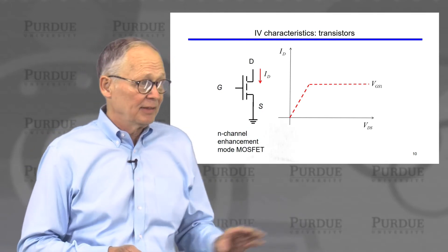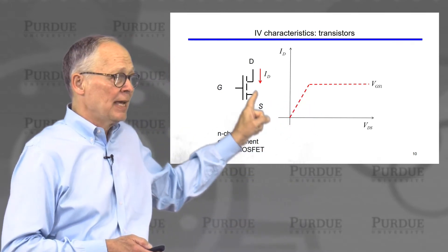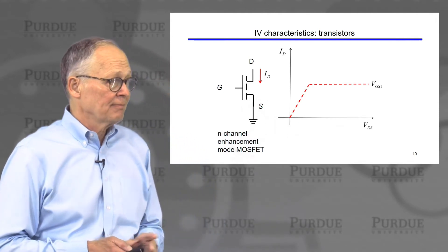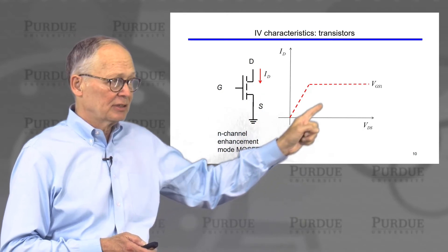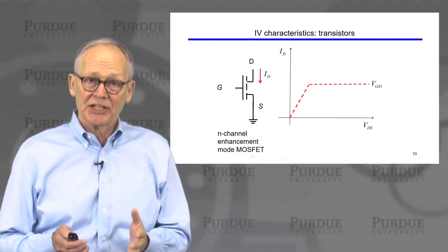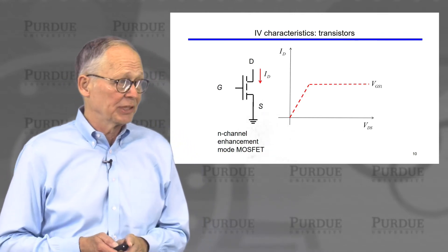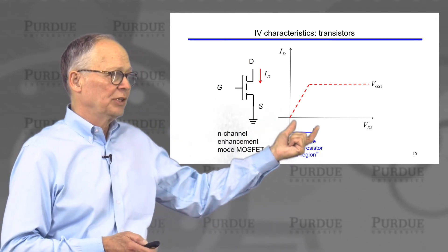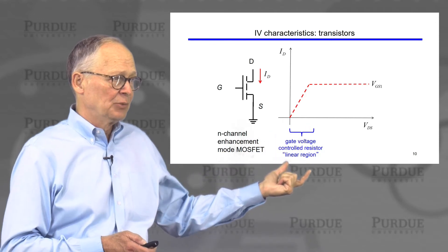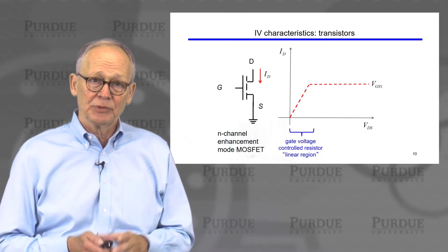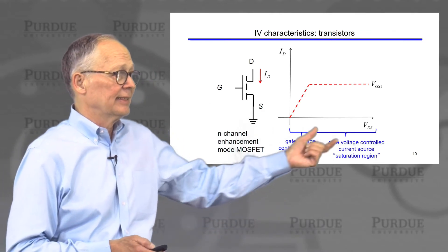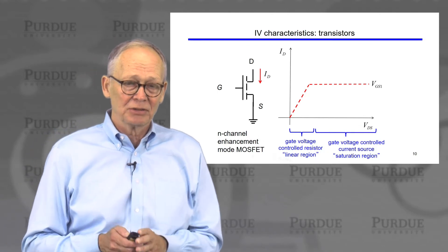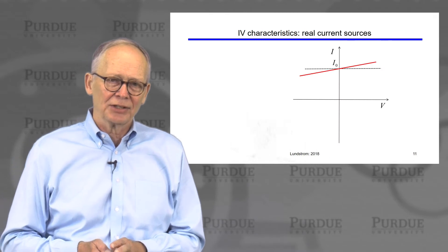The transistor characteristics look something like this. If we apply a small voltage between the drain and the source, the IV characteristic will look like a resistor — just a linear straight line. If we apply a large enough voltage between the drain and the source, the IV characteristic will begin to look like an ideal current source: the current will saturate and become independent of the applied voltage. So in the small voltage regime the device operates as a gate-voltage-controlled resistor, and in the saturation regime it operates as a gate-voltage-dependent current source.